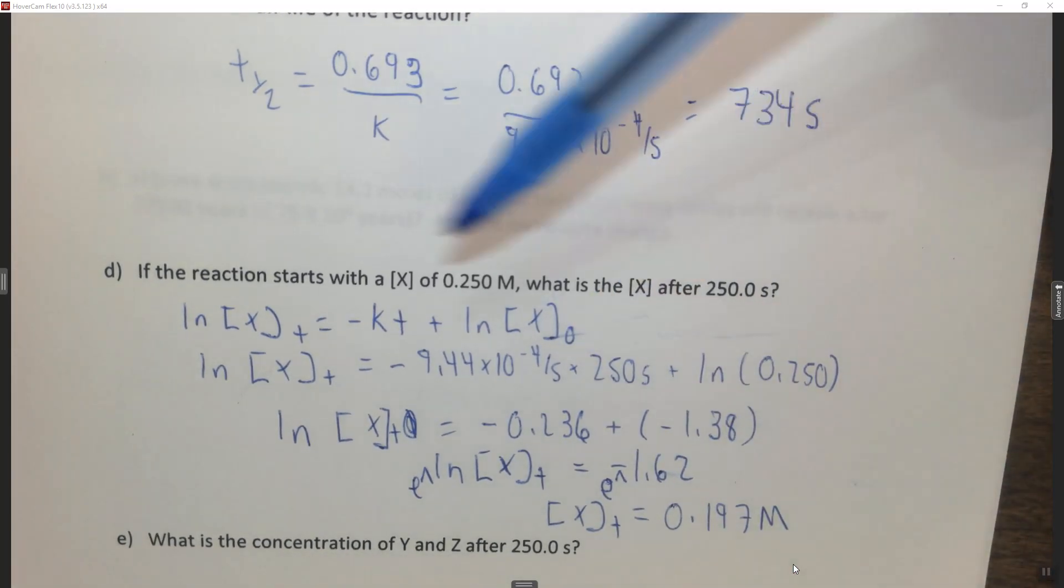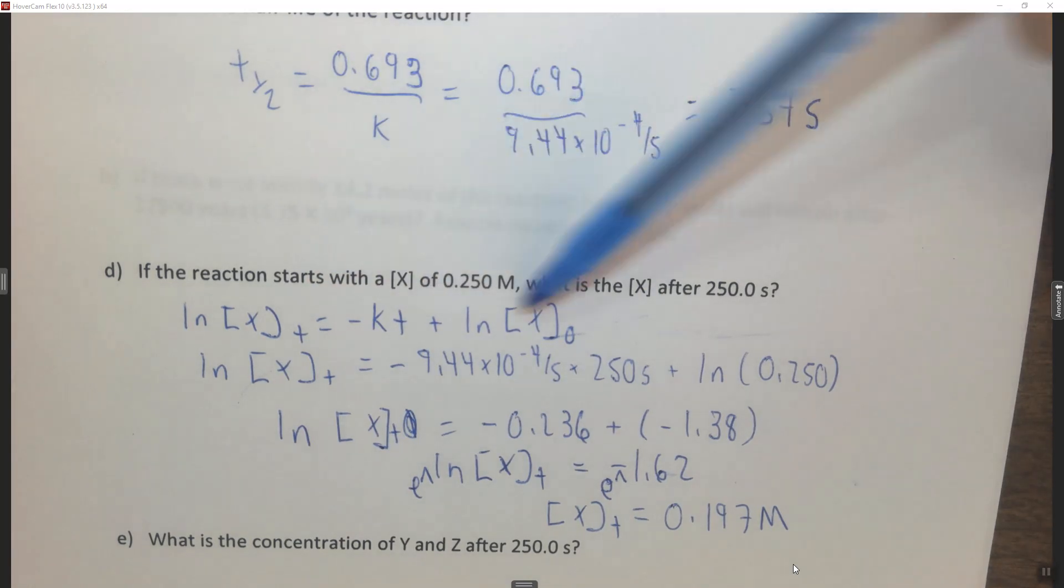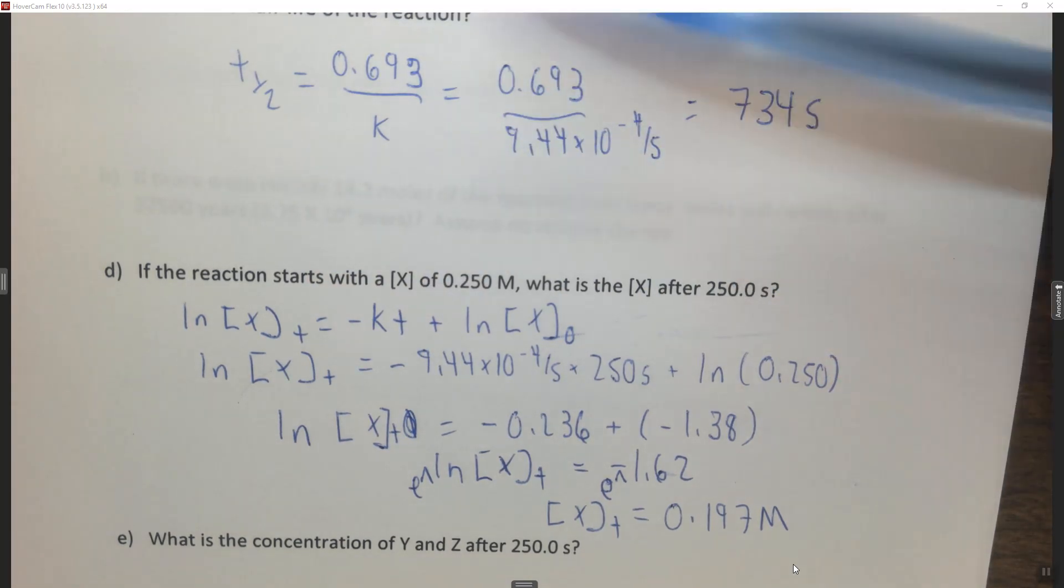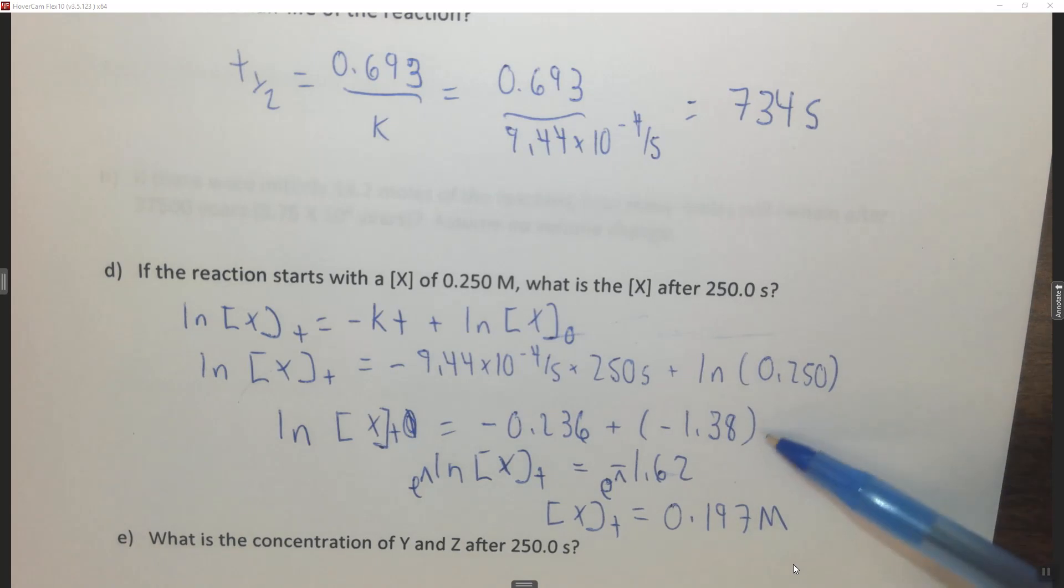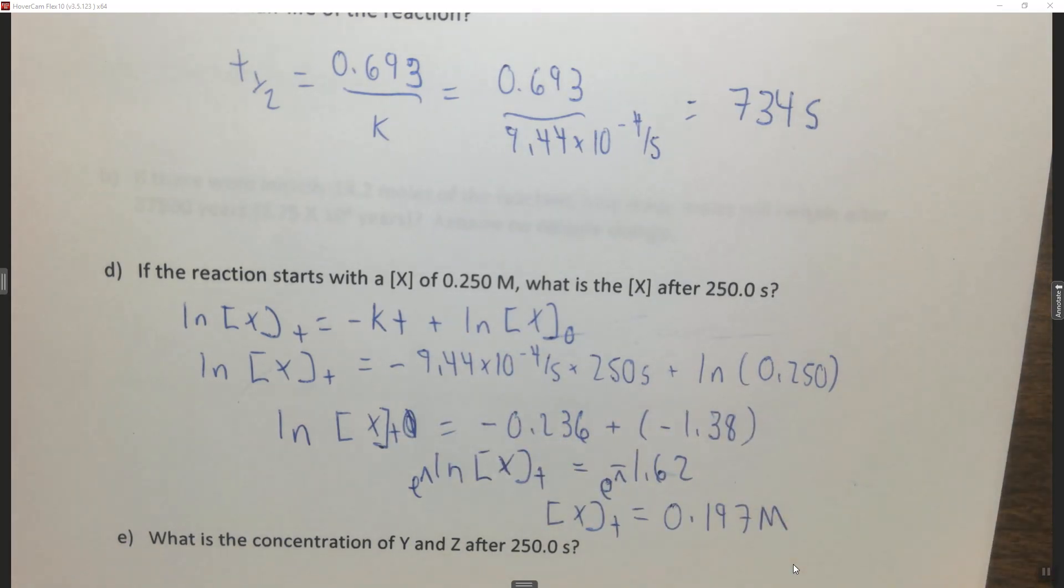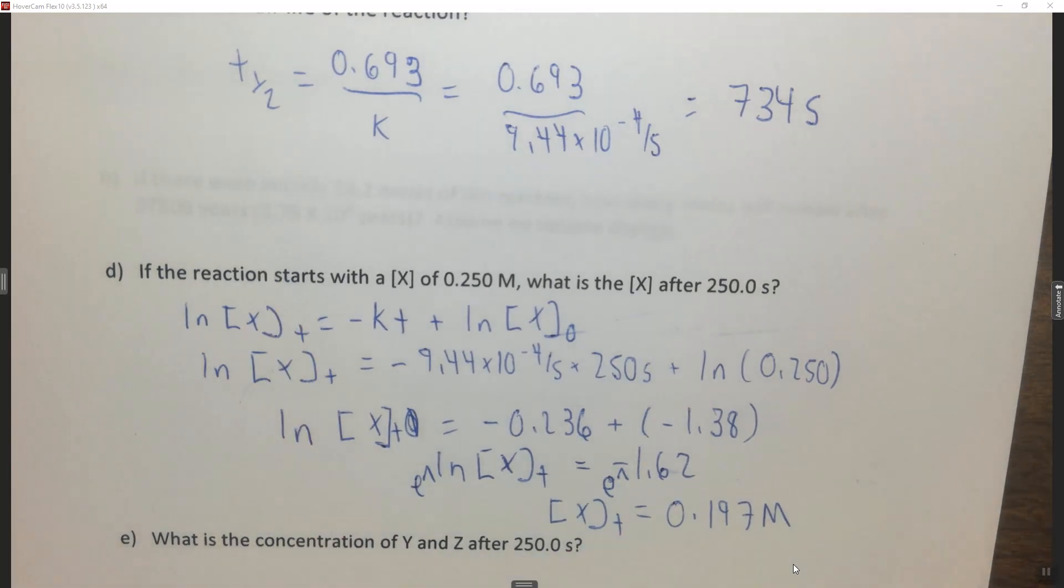So the concentration of x decreased through time. And I took the molar out over here and then I added it back in over here, just for clarity. The units here get tricky when you start using natural logs and stuff like that. So basically that's how we would do that. This tells us the concentration after some time.